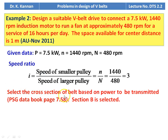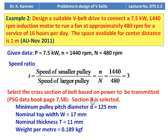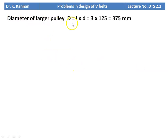Speed ratio i = N/n = 1440 / 480 = 3. Select the cross section of the V-belt based on power to be transmitted, referring to page 7.58. For 7.5 kW, we select section B. Details: minimum pulley pitch diameter d = 125 mm, nominal top width W = 17 mm, nominal thickness t = 11 mm, weight per meter = 0.189 kgf. Diameter of larger pulley D = 3 × 125 = 375 mm.